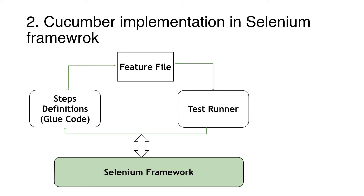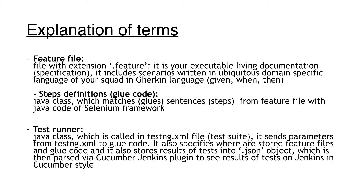How can Cucumber be implemented in a Selenium framework? In any team that already has an existing Selenium framework in Java, it is very easy to add Cucumber on top of it. You create a feature file written in Gherkin, then you have a test runner — a simple Java class — and then you need step definitions or glue code which maps the steps from the feature file with the rest of the automation framework written in Selenium.